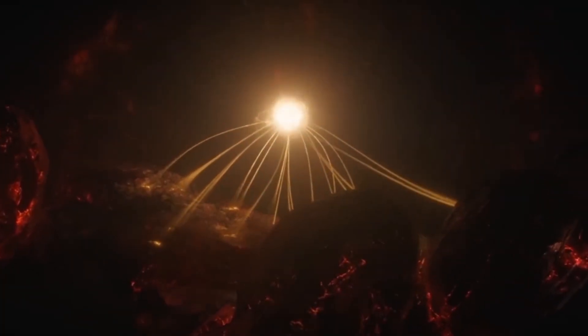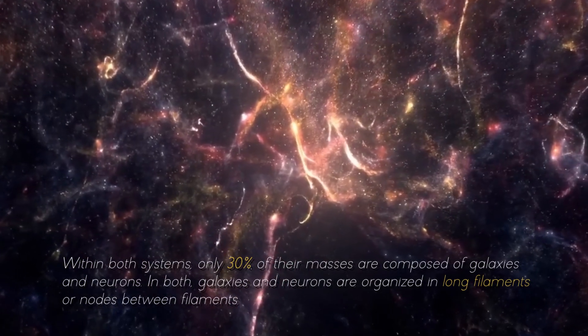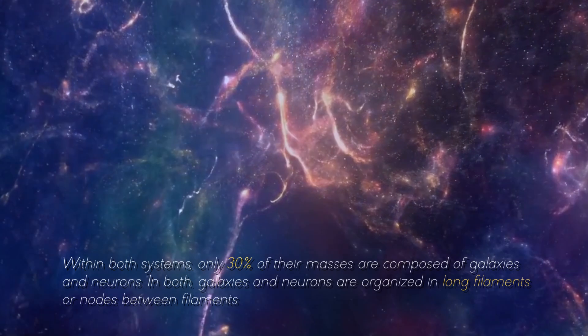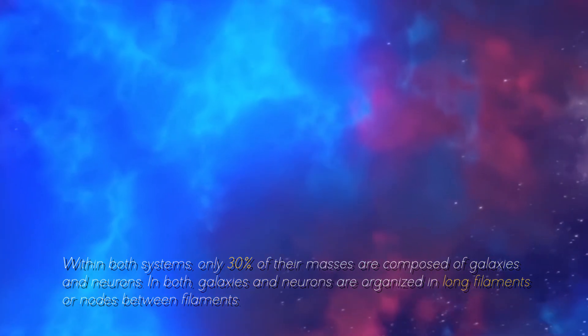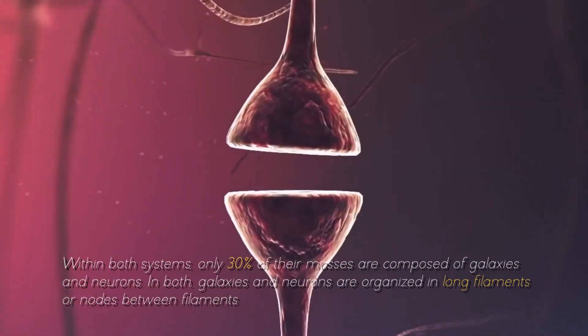Thus, it is not that our brain is like a universe, or that the universe is a brain of titanic proportions, but that their dynamics are similar. Within both systems, only 30% of the masses are composed of galaxies and neurons. In both, galaxies and neurons are organized in long filaments and nodes between filaments.